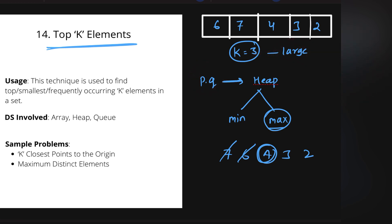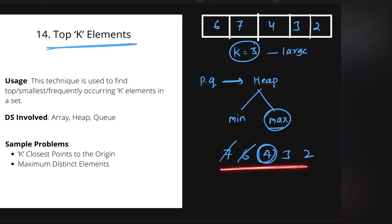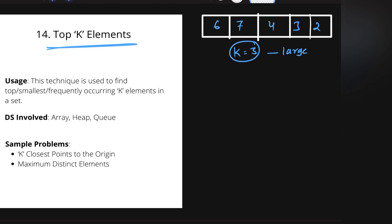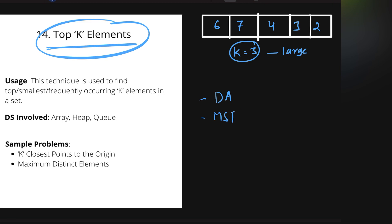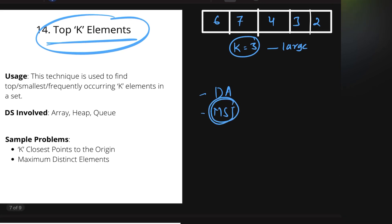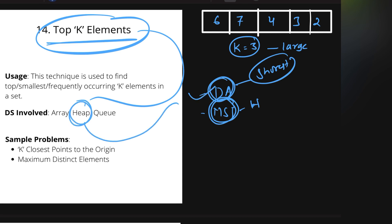If asked for the kth smallest element instead, we use a min heap, since it always surfaces the minimum element first. Top K Elements has a wide range of applications: it is used in Dijkstra's algorithm for shortest paths in graphs, in minimum spanning trees, cyclic sort, and topological sort — all of which rely heavily on heap-based priority queues.